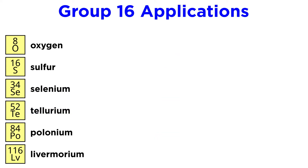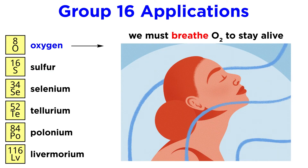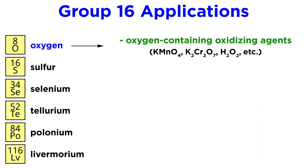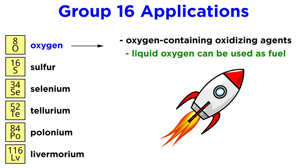Now let's talk about applications. Oxygen has the most obvious application of any element on the periodic table, as without molecular oxygen to breathe we die in minutes, just like all other aerobic life. But we have many industrial applications for oxygen as well. The chemical industry utilizes an enormous variety of oxygen-containing oxidizing agents. Many rockets use liquid oxygen as fuel.